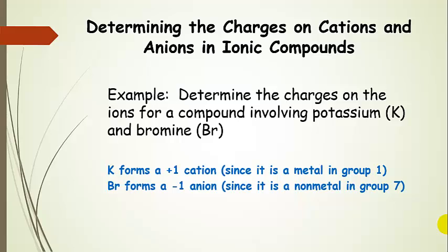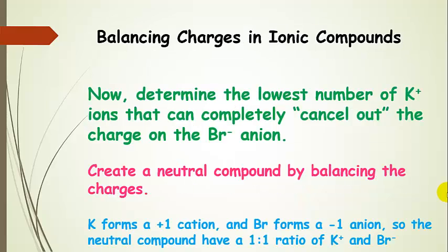Here's a little example. We're going to determine the charges on the ions for a compound involving potassium — elemental symbol K — and bromine. Looking on the periodic table, potassium forms a plus 1 cation; it's a metal in group 1. Bromine forms a minus 1 anion. We want to determine the lowest number of potassium cations that can completely cancel out the charge on the bromine anion, creating a neutral compound by balancing the charges. With potassium at plus 1 and bromine at minus 1, we can easily see by inspection that one potassium cancels out one bromine.